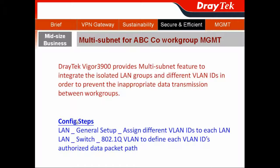The configuration steps are: go to LAN and choose General Setup, then assign different VLAN IDs to each LAN. Then go to Switch and use the 802.1Q VLAN to define each VLAN ID's authorized data package.